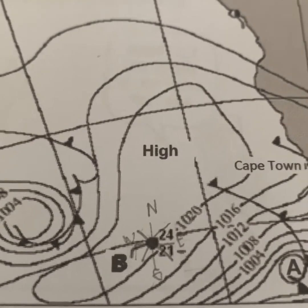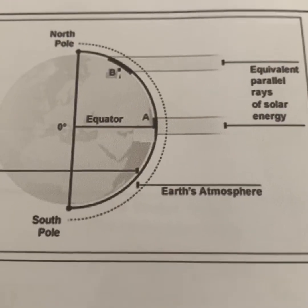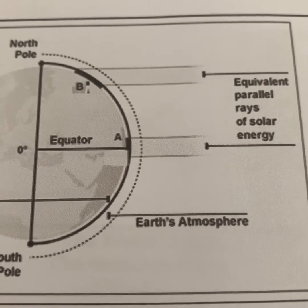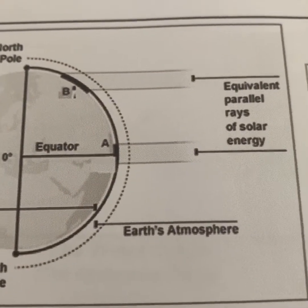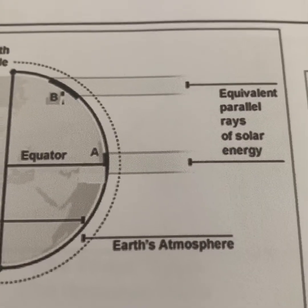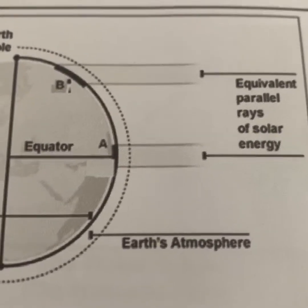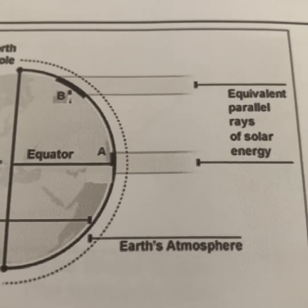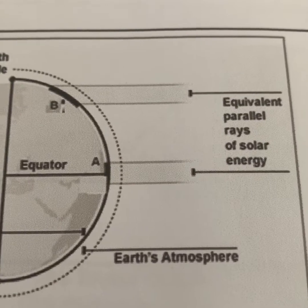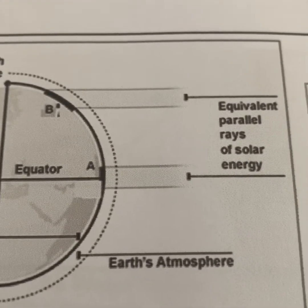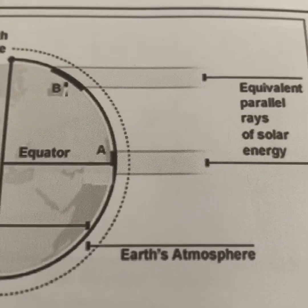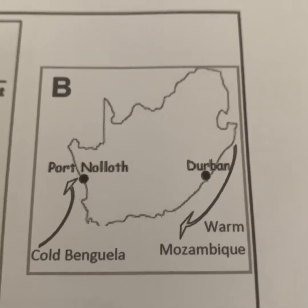This question asks: will temperature likely be higher in area A or area B? My answer is area A. The reason is that area A is at the equator, which receives direct sunlight throughout the year — the sun's rays strike there directly. Another reason is that solar energy travels through a smaller volume of atmosphere compared to area B, where it travels through a larger volume. Area B doesn't receive as much direct sunlight, so the temperature is lower there.